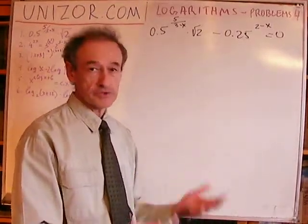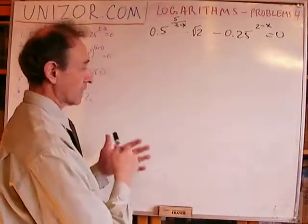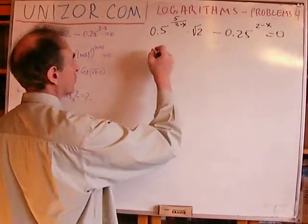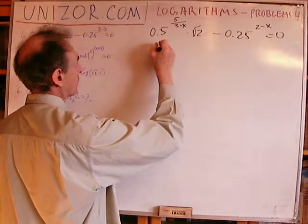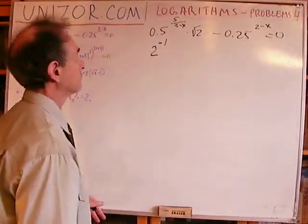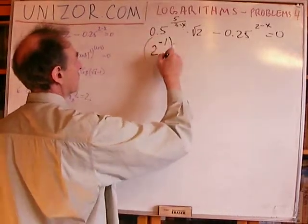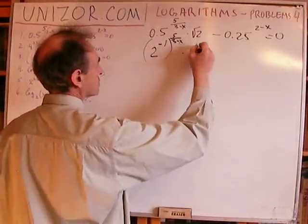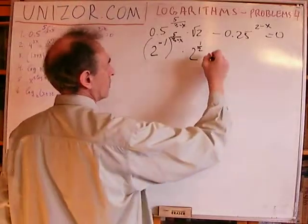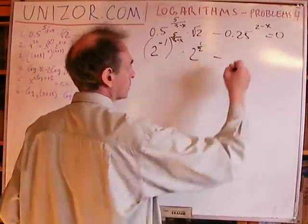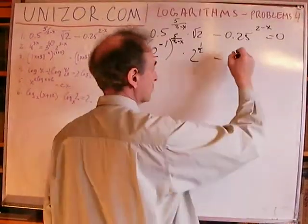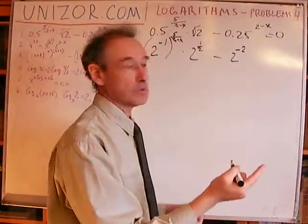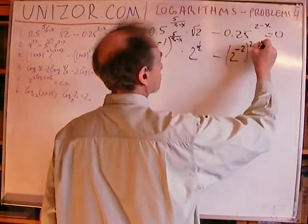So let's bring everything to powers of 2 — that's exactly what would unify the whole equation and make it much better. What is 0.5? It's 2 to the power of minus 1, that's one half, raised to the power of (3 minus x). Square root of 2 is 2 to the power of 1/2. Minus — one quarter is 2 to the power of minus 2. The minus will invert it to 1/2 and 2 will square it, giving 1/4, and this is to the power of (2 minus x) equals 0.